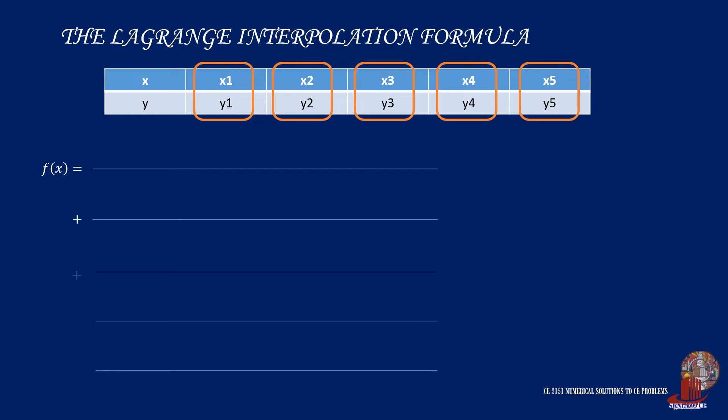The number of terms we have to solve is the same as the number of data points. These terms are added together and each of them will be multiplied by y correspondingly, like y1 for the first term, y2 for the second, and so forth. Now let's get deeper into each term.